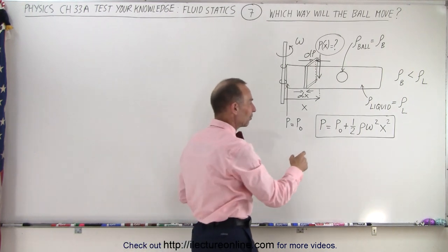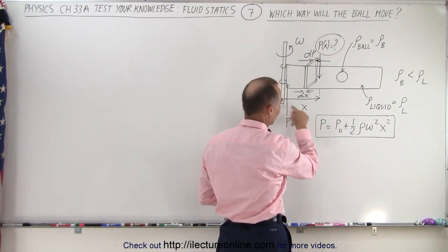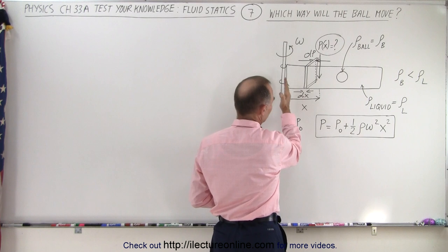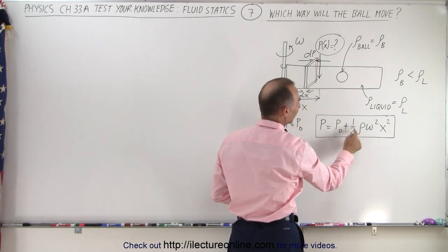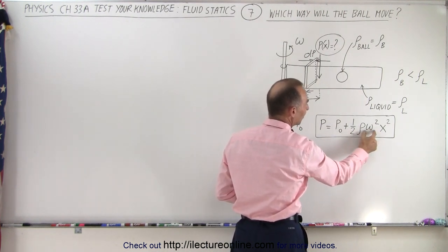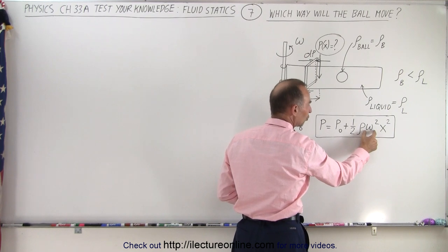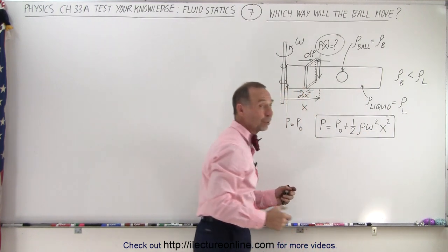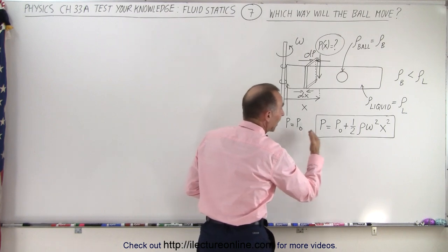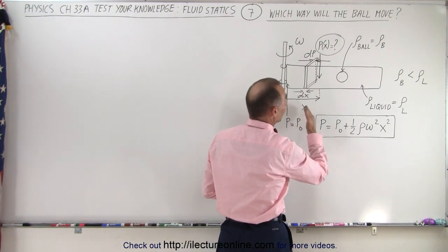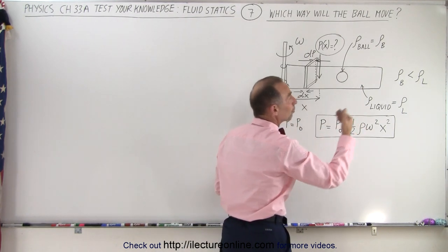And remember that on the last video we found that the pressure as a function of x was equal to the initial pressure at the beginning, plus one-half the density of the liquid times the angular velocity squared times x squared. In other words, the pressure is a function of x squared, which means the farther you go to the right, the greater the pressure.